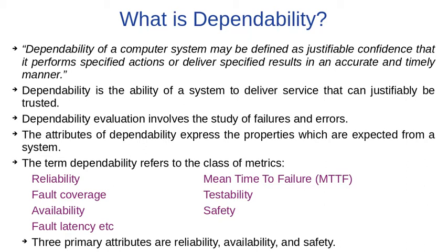The attributes of dependability express the properties which are expected from a system. The term dependability refers to the class of metrics such as reliability, availability, fault coverage, fault latency, mean time to failure, testability, and safety. The 3 primary attributes are reliability, availability, and safety.